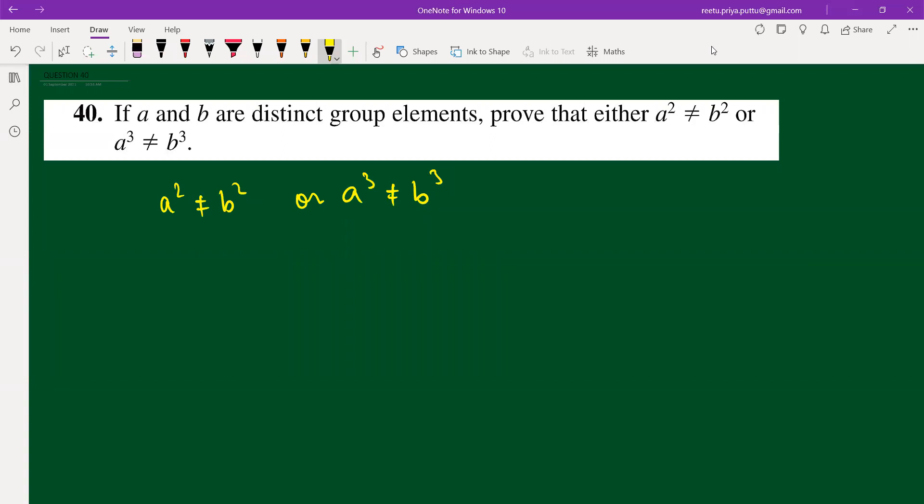Let me show you how. If I consider that a² equals b² and a³ equals b³, I will consider both of these assumptions.